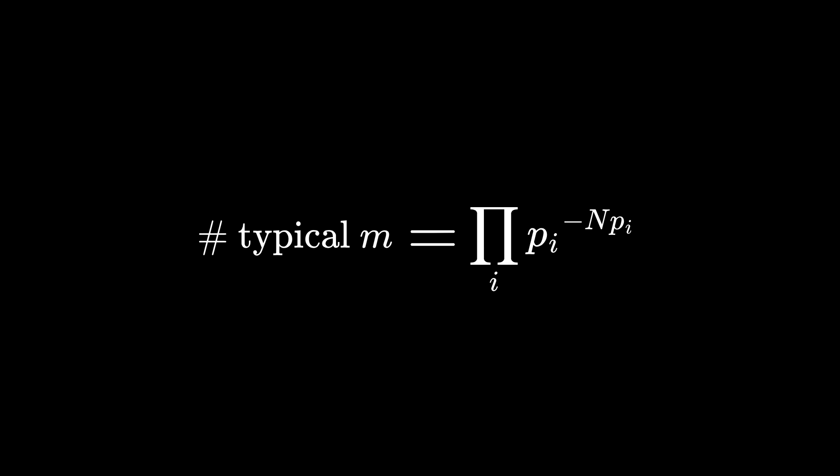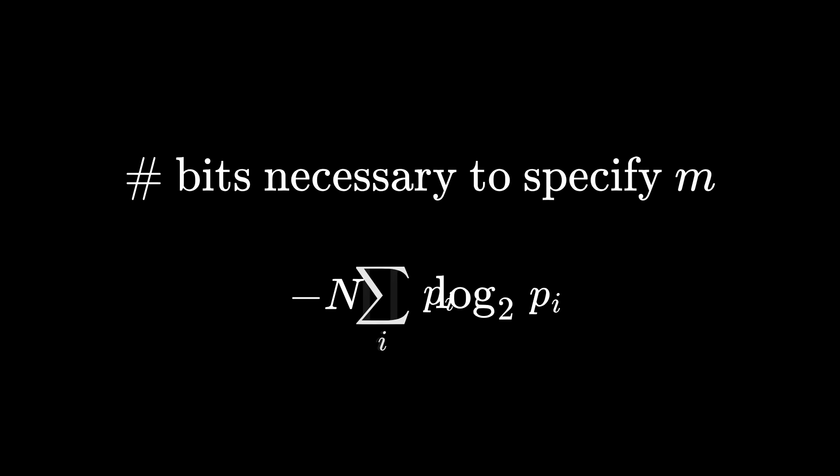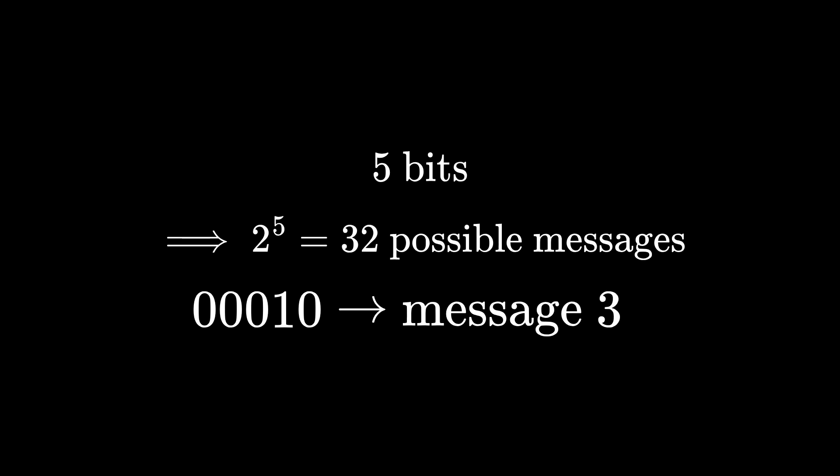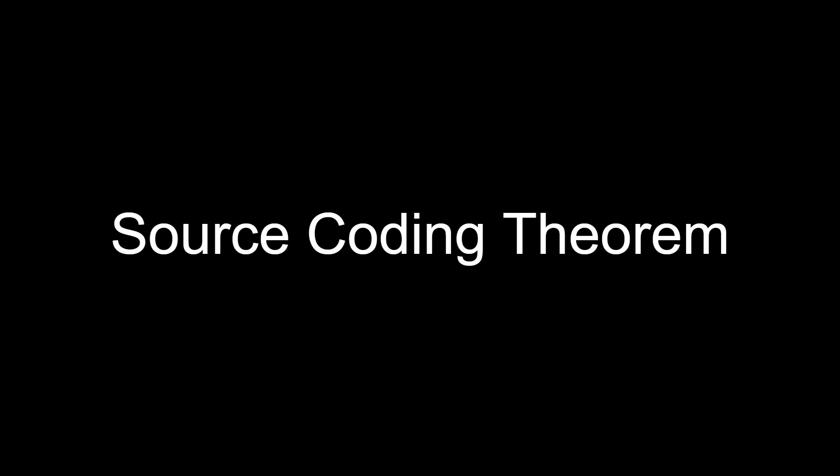Thus, the number of bits you need to point to a specific typical message with n symbols is log base 2 of this. This comes from the fact that a binary code of l bits can only distinguish between 2 to the power of l different messages. We also can't use shorter codes because those are for the shorter messages.